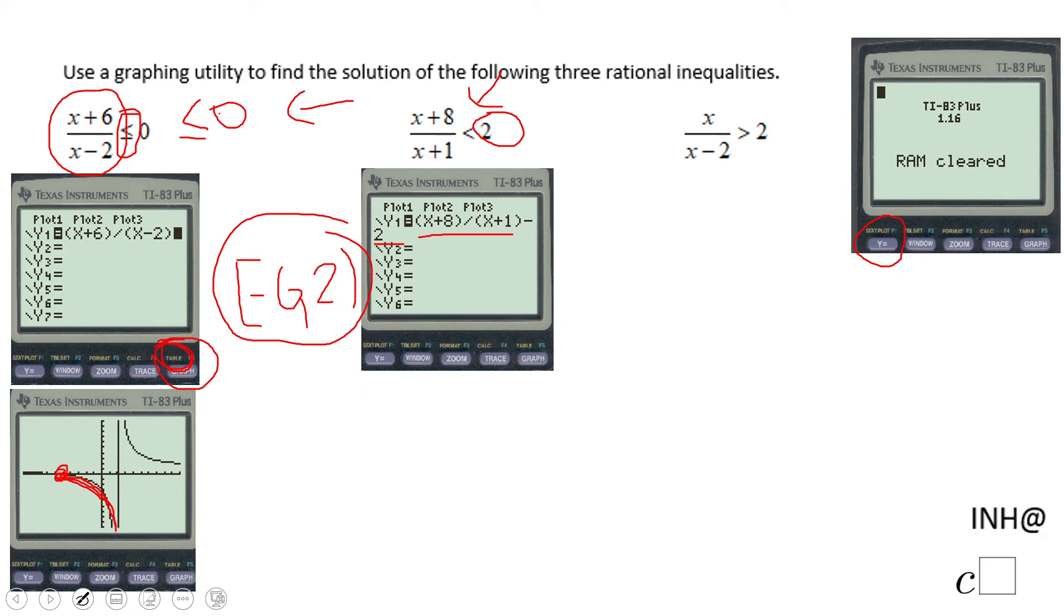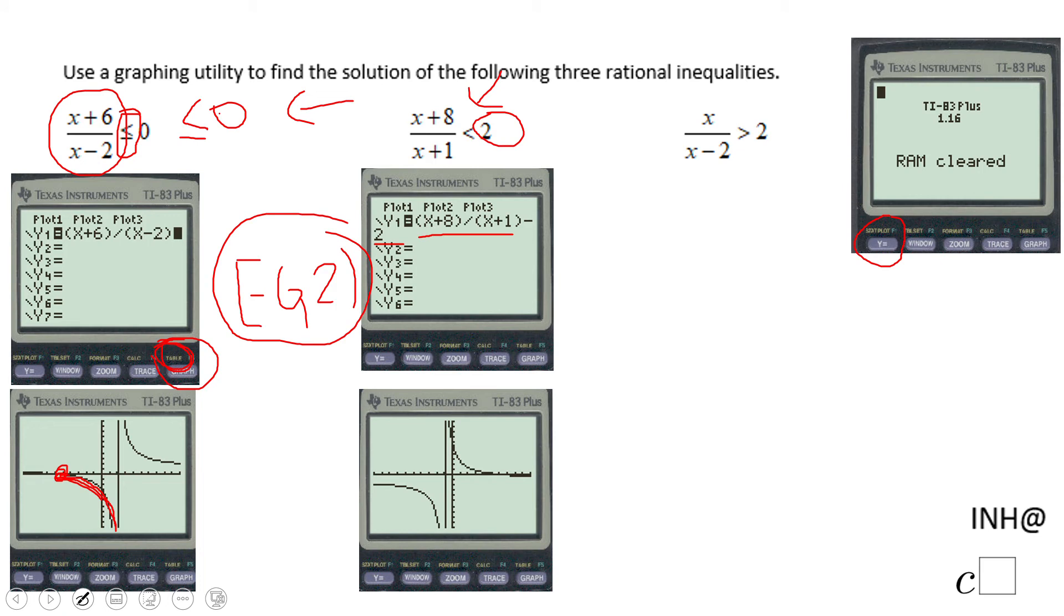On the graph we're going to look when the rational function is under the x-axis because you have less than zero. That happens here, negative infinity to looks like zero, and somewhere here it looks like about seven.